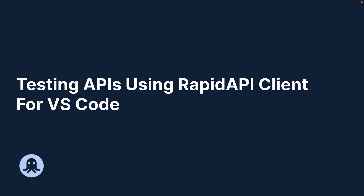Let's now talk about testing APIs using RapidAPI Client for VS Code. We will test two kinds of REST APIs using this extension. The first will be a public REST API from RapidAPI Hub, and the second will be a REST API serving from a Node.js and Express.js server. We will set up a simple Node.js REST API for this one.